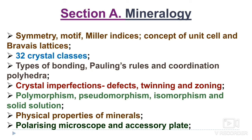Paper 2, Section A is mineralogy. Topics include symmetry motifs, Miller indices, concept of unit cell and Bravais lattice, and 32 crystal systems. Types of bonding, Pauling's rules, and coordination polyhedra are important — Pauling's rules were not previously included so questions can now come from this area. Crystal imperfections, defects, twinning, and zoning are also new topics. Polymorphism, pseudomorphism, isomorphism, and solid solutions are included. Physical properties of minerals, the polarizing microscope, and accessory plates will also be covered.